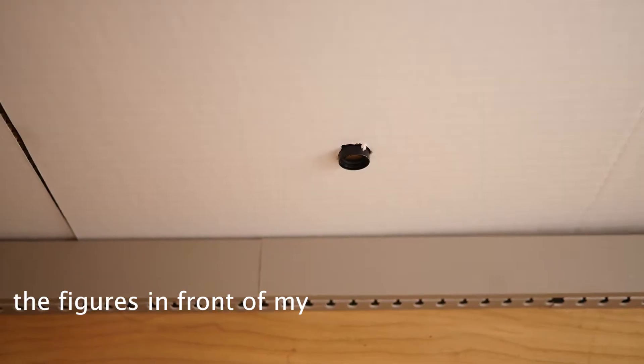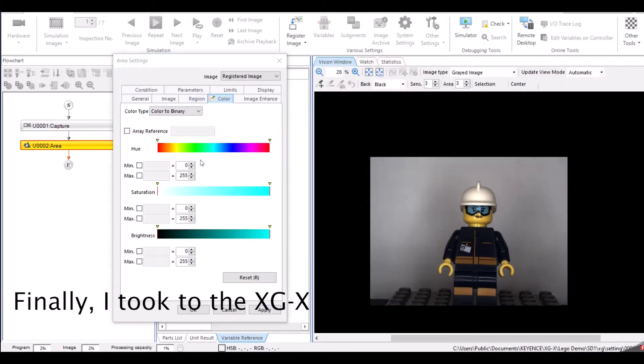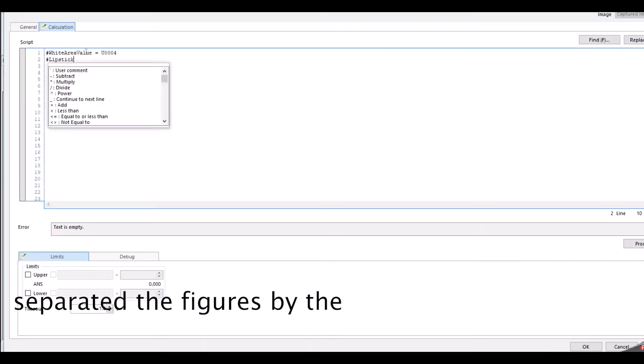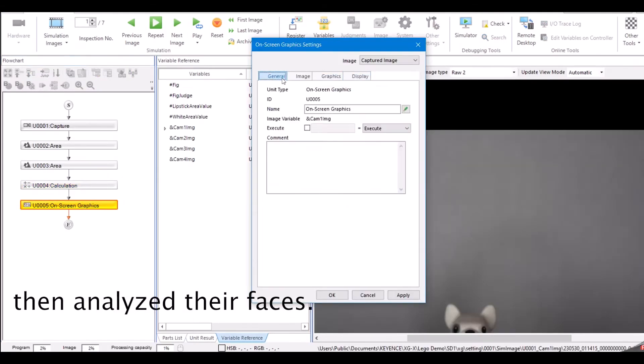I then set up a conveyor belt to bring the figures in front of my Keyence camera. Finally, I took to the XGX software and threw together a program that separated the figures by the color of their clothes and then analyzed their faces.